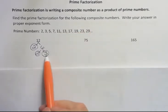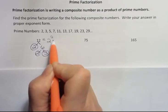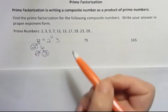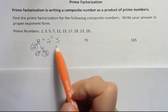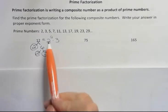So notice I have two 2's and a 3, and I'm going to write that as 2 to the second power times 3. The correct notation, the smaller number, the lesser number goes first.